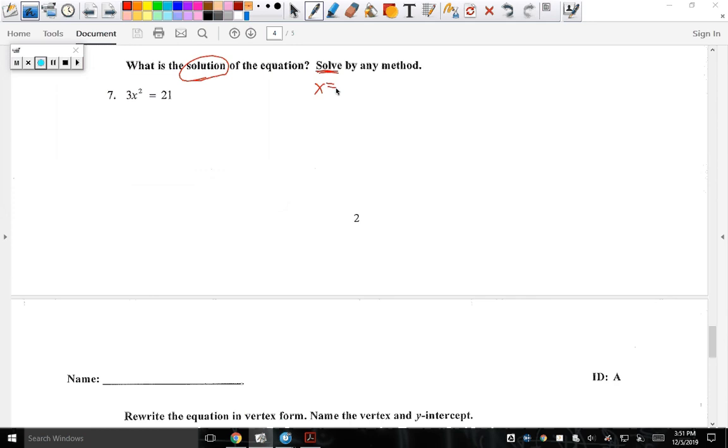Any method whatsoever. You could do factoring, you could do factor by grouping, you could do completing the square. You could just solve it, you could graph it. There's so many things that you could do.